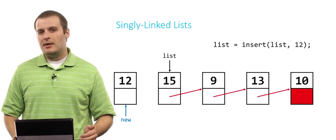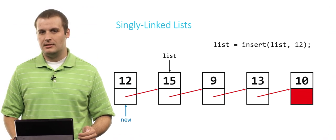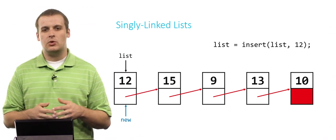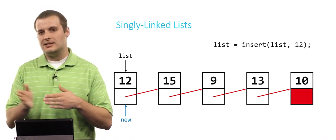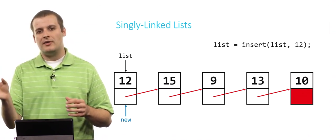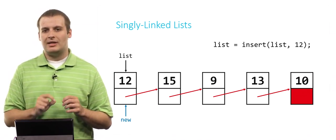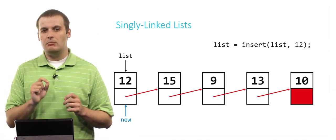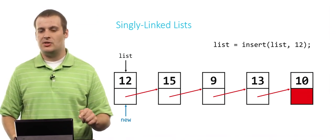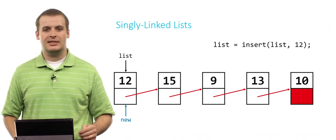The correct order is to set 12's next pointer to the old head of the list first, then move the list pointer. We always want to connect the new element into the list before changing where the head of the linked list is - we don't want to lose track of it. So: connect 12 to the list, then say the list starts at 12. If we said the list starts at 12 and then tried to connect 12 to the list, we'd lose the list by mistake.